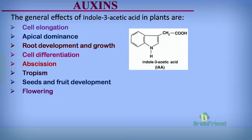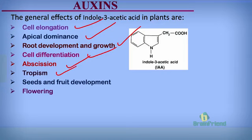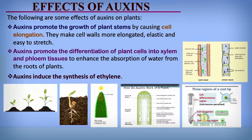Apart from growth, auxin performs various functions in the bodies of plants. Auxin is one of the major plant hormones that is usually considered. Some of the effects of auxin in plants include cell elongation, apical dominance, root development, cell differentiation, abscission, tropism, seed and fruit development, and lastly flowering. These and many more are the effects of auxin in plants. When we talk about auxin, in most cases we refer to indole-3-acetic acid (IAA), which is the most common type of auxin.